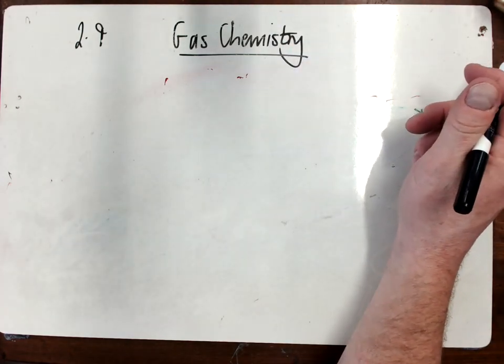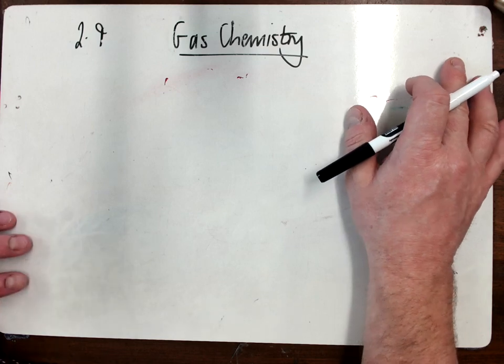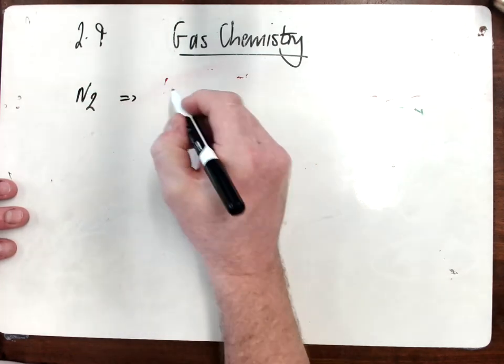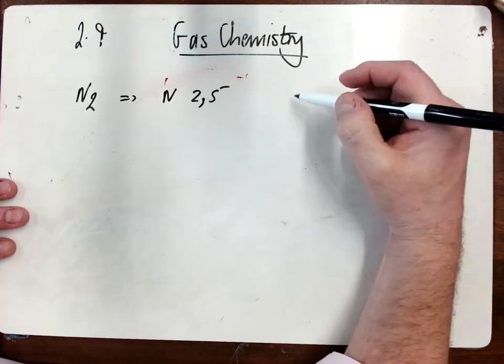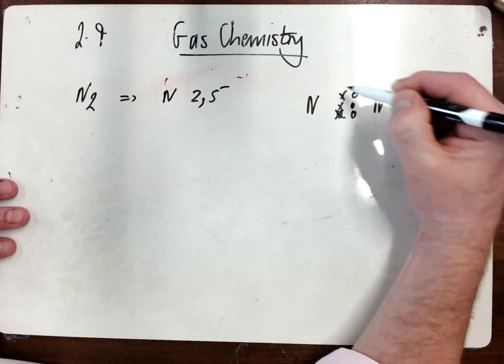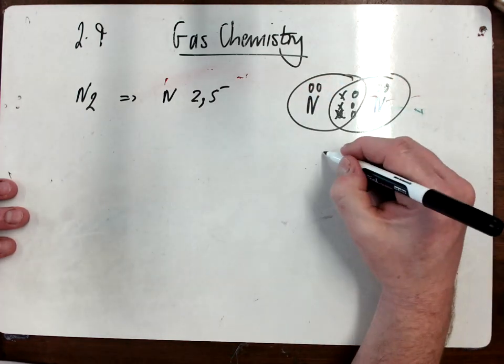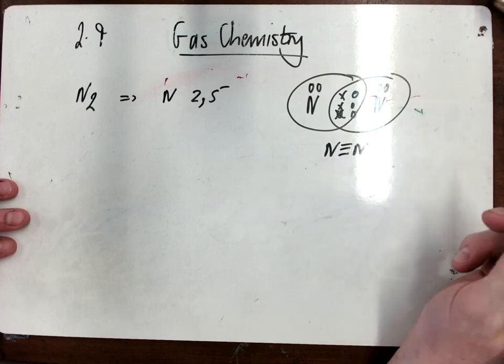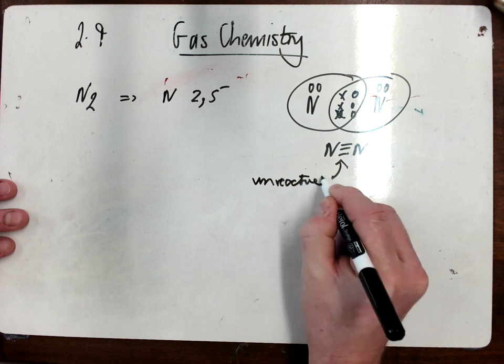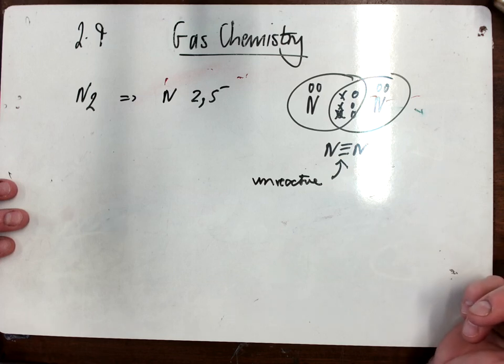The first gases we'll look at - you've got to do nitrogen, hydrogen, carbon dioxide and oxygen. We'll look at nitrogen first, which is a diatomic molecule with a formula of N2. Nitrogen has electron configuration of 2,5 and it shares three electrons with an adjacent nitrogen to get its full outer shell. That leaves nitrogen with what we call a triple covalent bond, and that means nitrogen is very unreactive. It's very unreactive because of this triple bond - it requires a huge amount of energy to break.